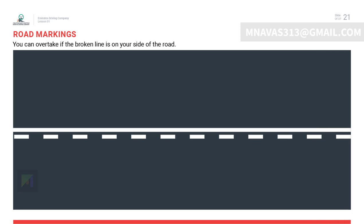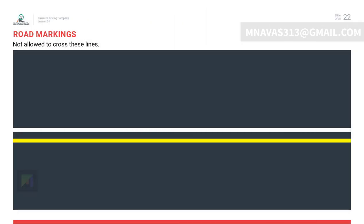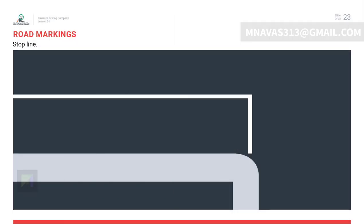You can overtake if the broken line is on your side of the road. Solid lines are not allowed to be crossed. Road markings also include the stop line, which indicates where you must halt.